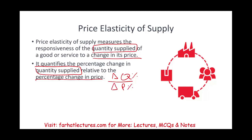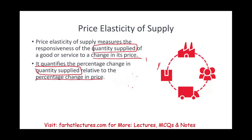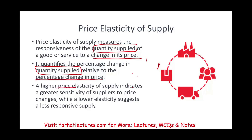The formula for supply is the same as we used for demand in the prior session. A higher price elasticity of supply indicates a greater sensitivity of suppliers to price changes — suppliers can react quickly to prices. Lower elasticity suggests a less responsive response.